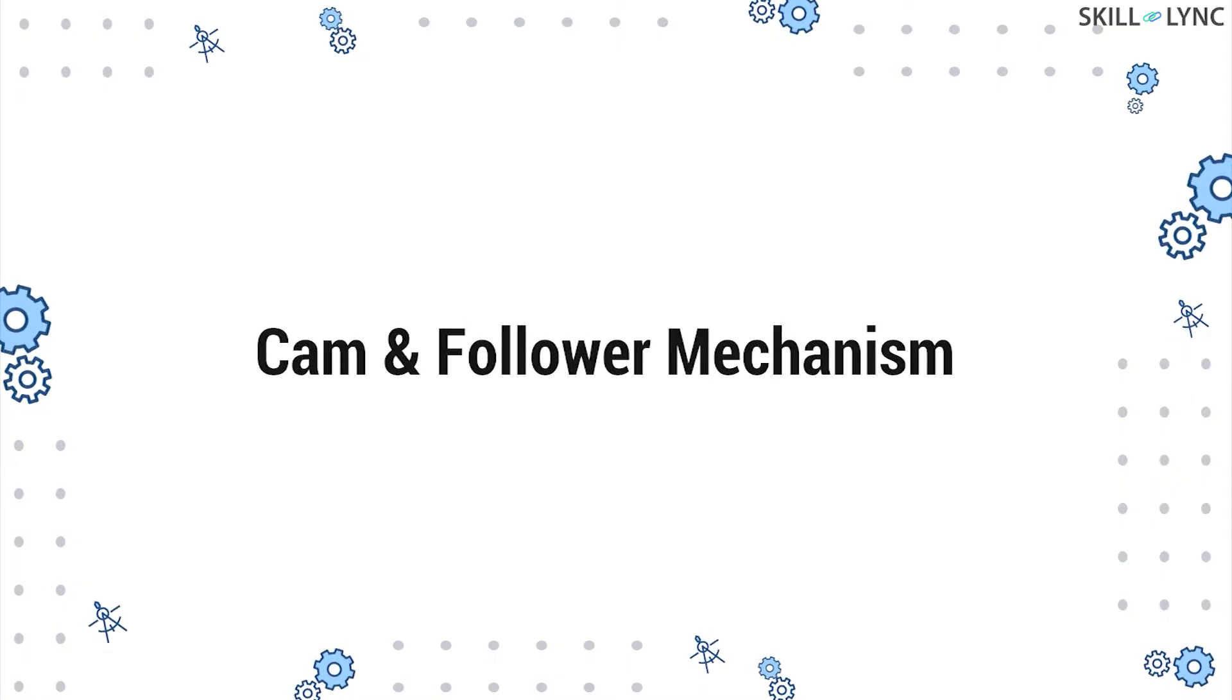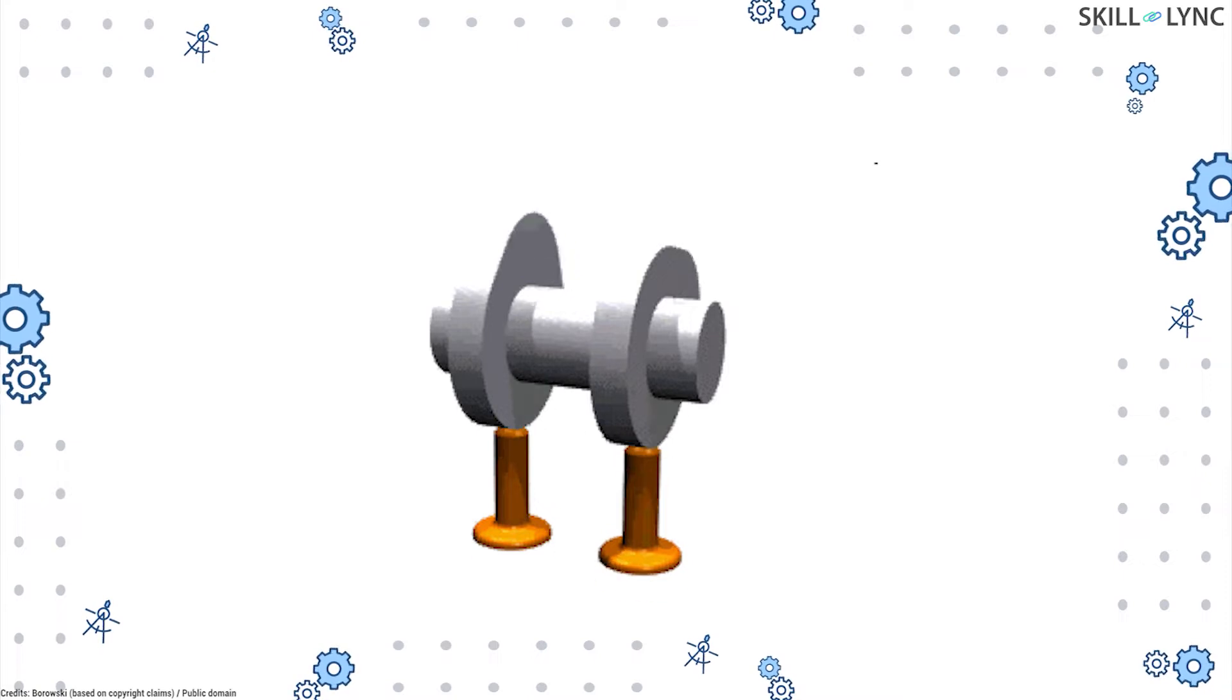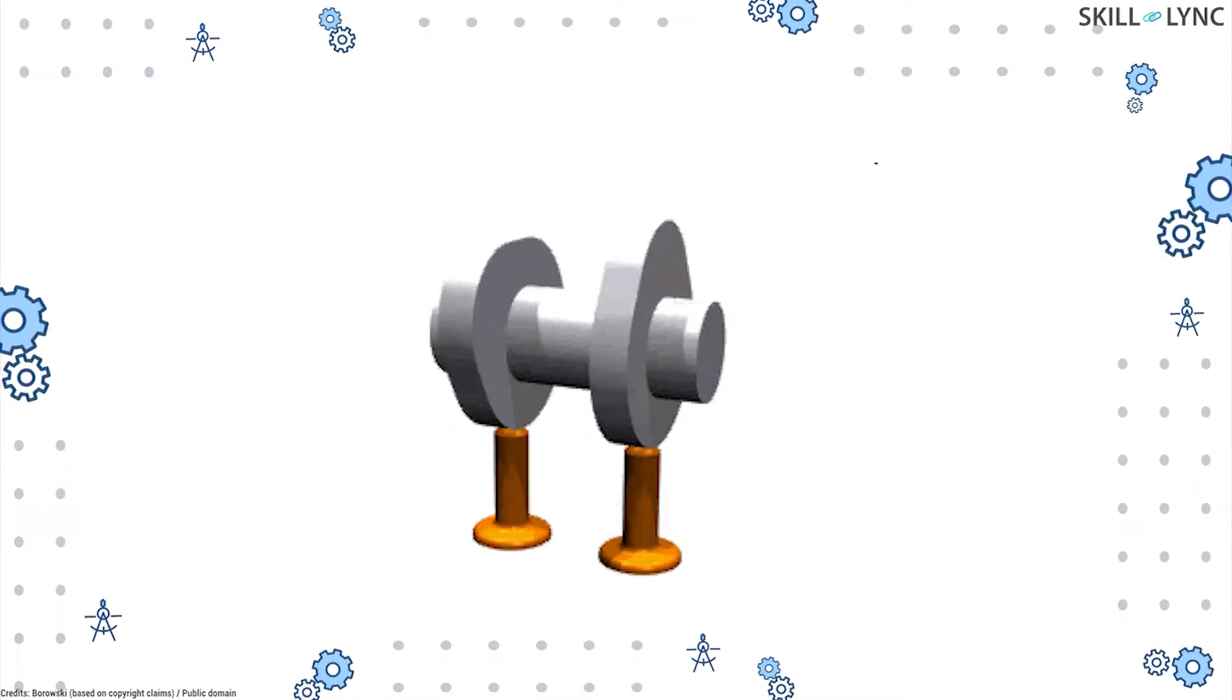Before moving on to the types, let's discuss how a cam and follower mechanism works. A cam is a mechanical device that is used to achieve the desired reciprocating or translating motion.